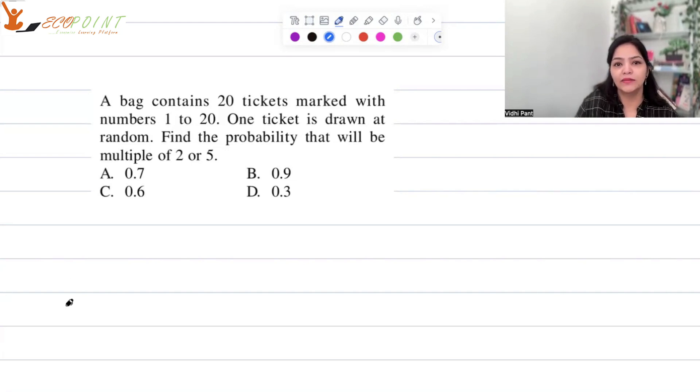A bag contains 20 tickets marked with numbers 1 to 20. One ticket is drawn at random. Find the probability that will be multiple of 2 or 5. So we have a bag with tickets 1, 2 till 20, so the sample space n is 20. Let A be the event getting a multiple of 2, and B event getting a multiple of 5.